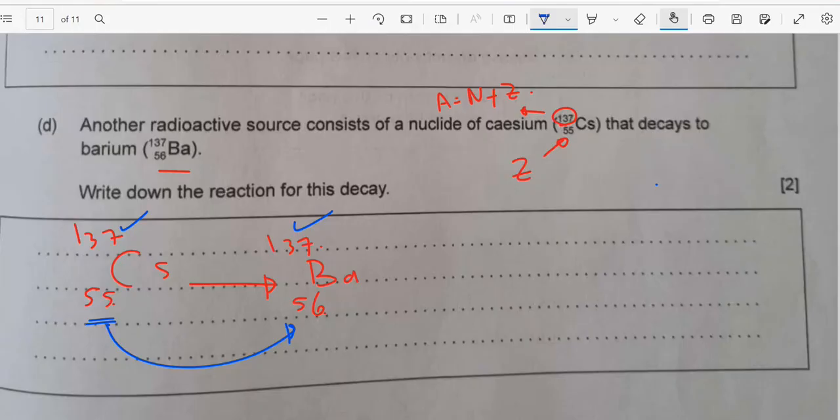So here it will be plus beta negative decay and here plus the electron antineutrino. Now here I have 55, if we add 55 minus 1 to give me 55, so the equation, my equation is balanced. This is the correct equation.